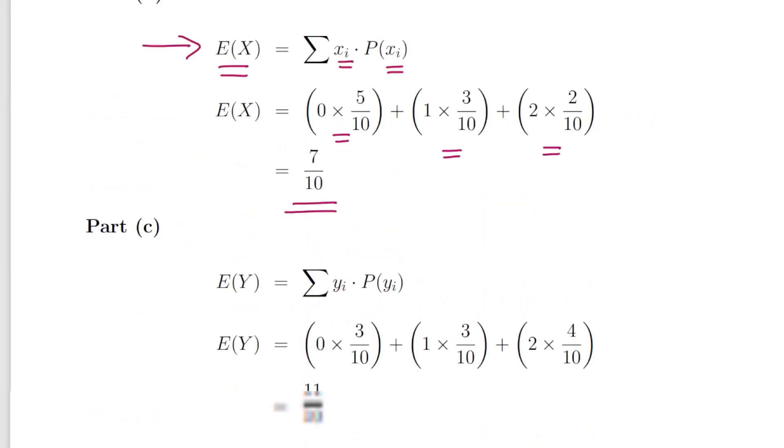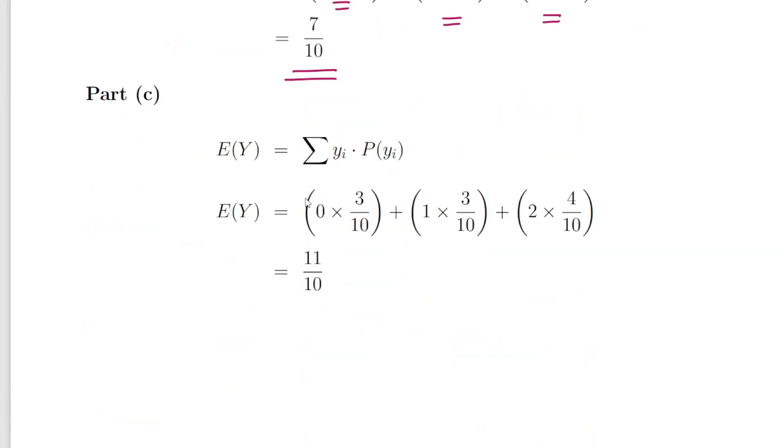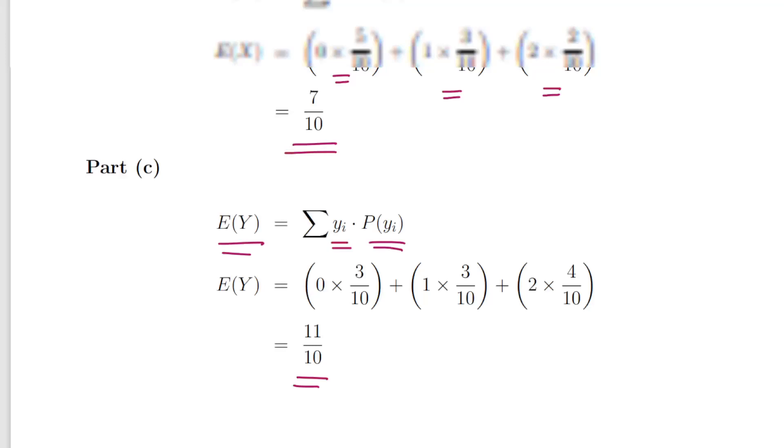We do the same for Y. The expected value of Y is the sum of all the Y values times the probability of those Y values. 0 times 3 over 10 plus 1 times 3 over 10 plus 2 times 4 over 10. That works out to be 11 over 10. So the expected value of Y is 1.1, which is to say 11 over 10.